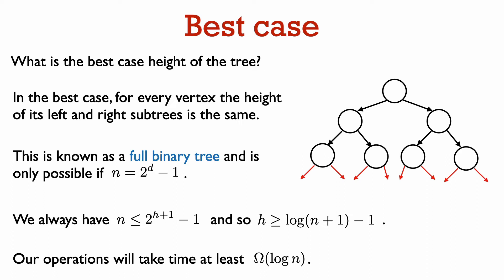If the height of the tree is h, then when every level is completely full, the number of nodes in the tree is 1 plus 2 plus 4 plus 8, etc., all the way up to 2 to the power h. And so the total number of nodes is 2 to the power h plus 1 minus 1.